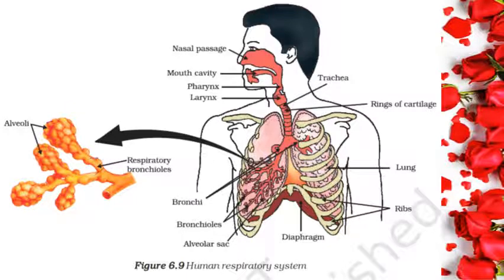Since the aerobic respiration pathway depends on oxygen, aerobic organisms need to ensure that there is sufficient intake of oxygen. Plants exchange gases through stomata and the large inner cellular space ensures that all cells are in contact with air. Carbon dioxide and oxygen are exchanged by diffusion here — they can go into cells or away from them and out into the air.